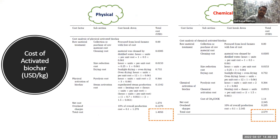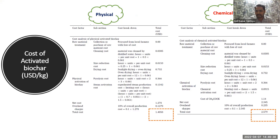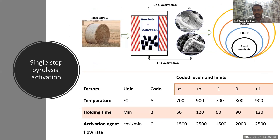We also performed a cost analysis. The physical activated carbon cost approximately 1.4 USD per kg, and the chemical activated carbon cost 2.57 USD per kg. The difference in price is due to the cost of chemicals, and the quality is also different between the two.